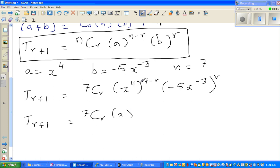So let me simplify this a little. So T_r+1 is equal to 7Cr times x to the power, it's power of power. You see it x multiply. So this is 28 minus 4r times minus 5 to the power r times x to the power minus 3r. So T_r+1 is equal to 7Cr. So you've got these two x's. So this becomes x to the power 28 minus 7r times minus 5 to the power r.